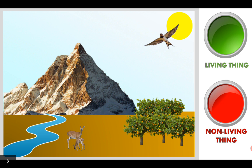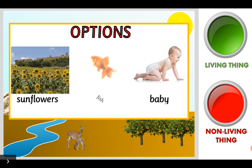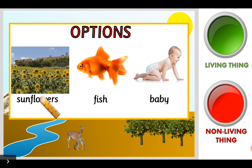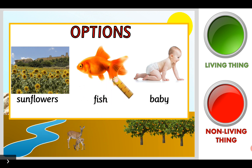One more thing. Do you want to add a living thing or a non-living thing? I am going to choose living thing. A plant, a person and an animal. What would you like to add? Sunflowers, a fish or a baby? A baby here with a deer — yeah, I don't know. The sunflowers could be. But what about a fish here in the river? Would you like that? I think I'm going to choose the fish.